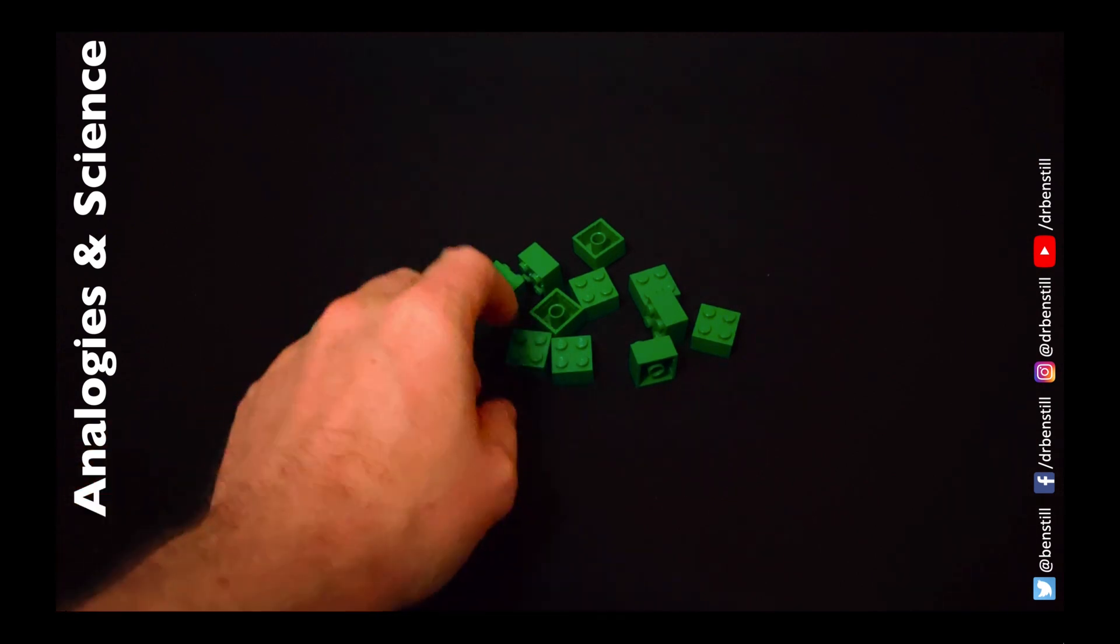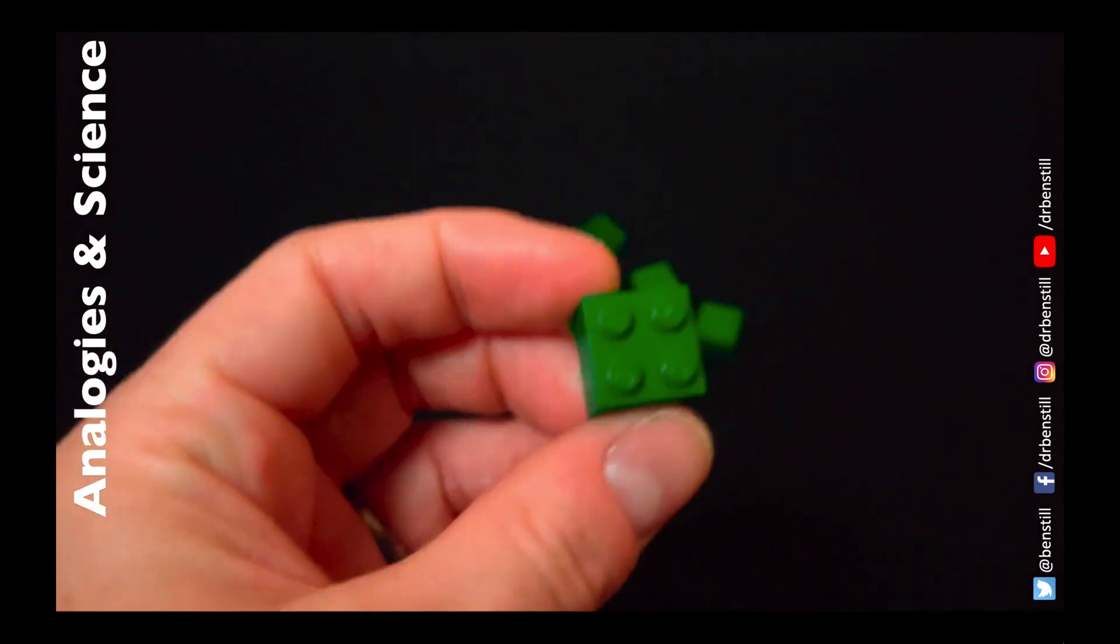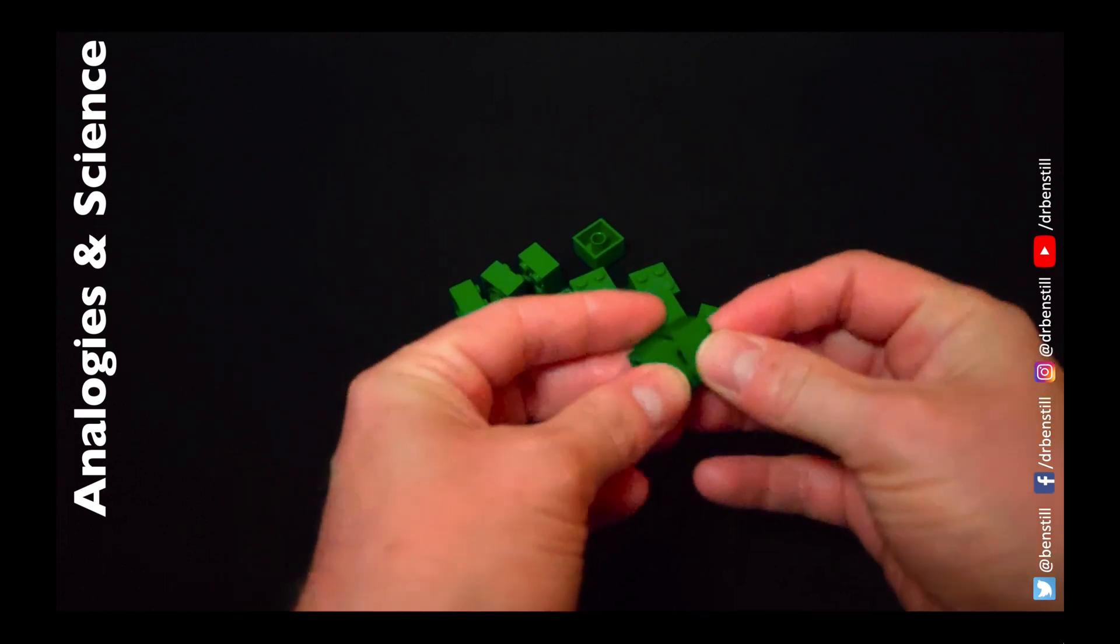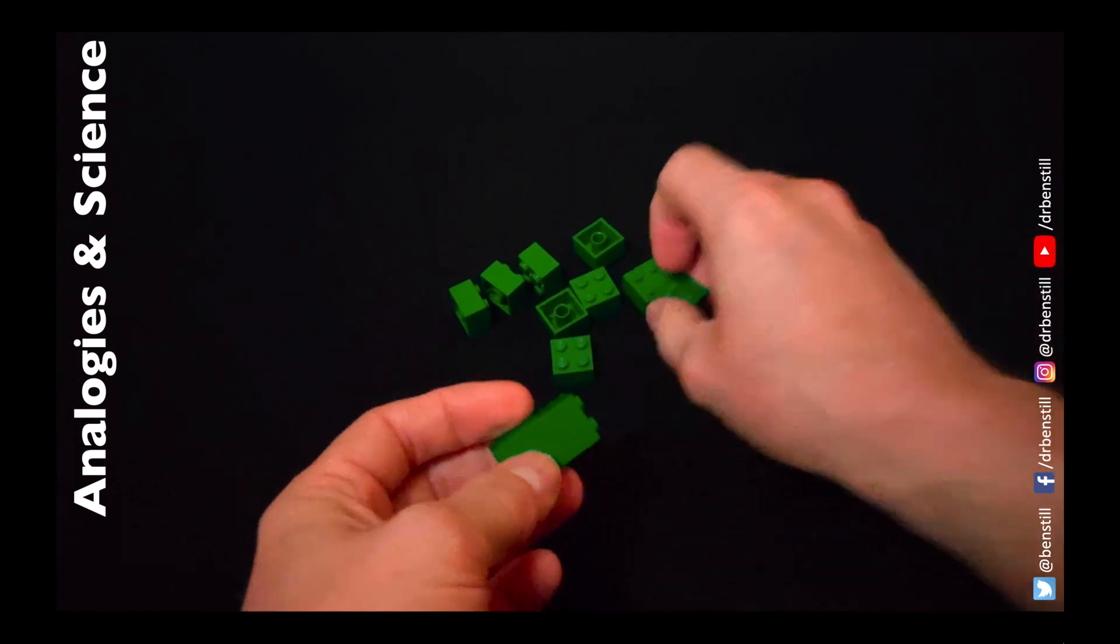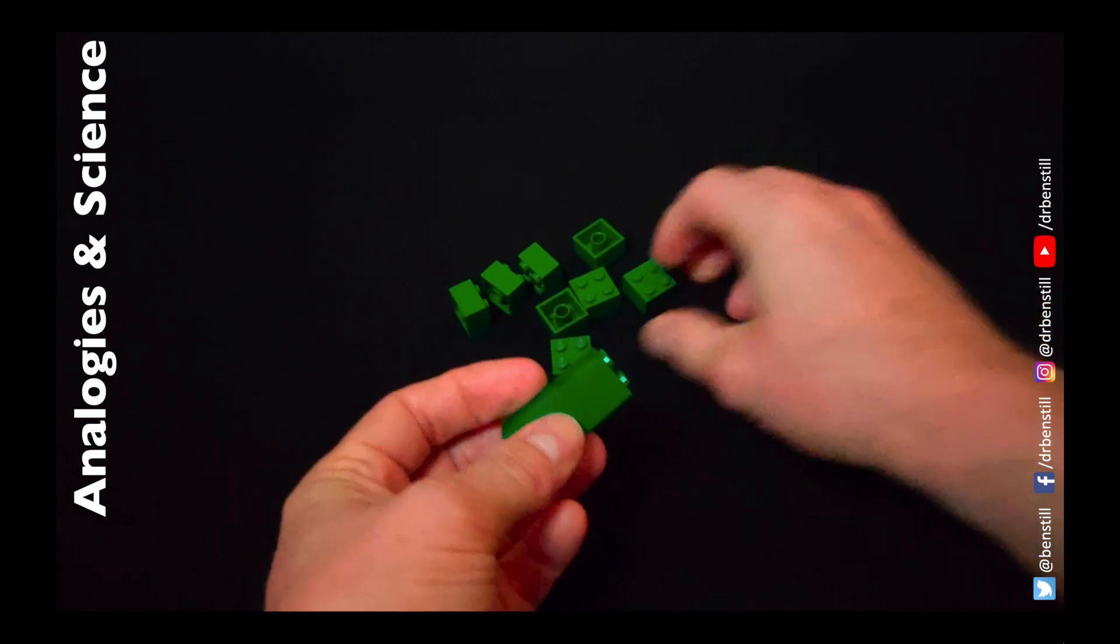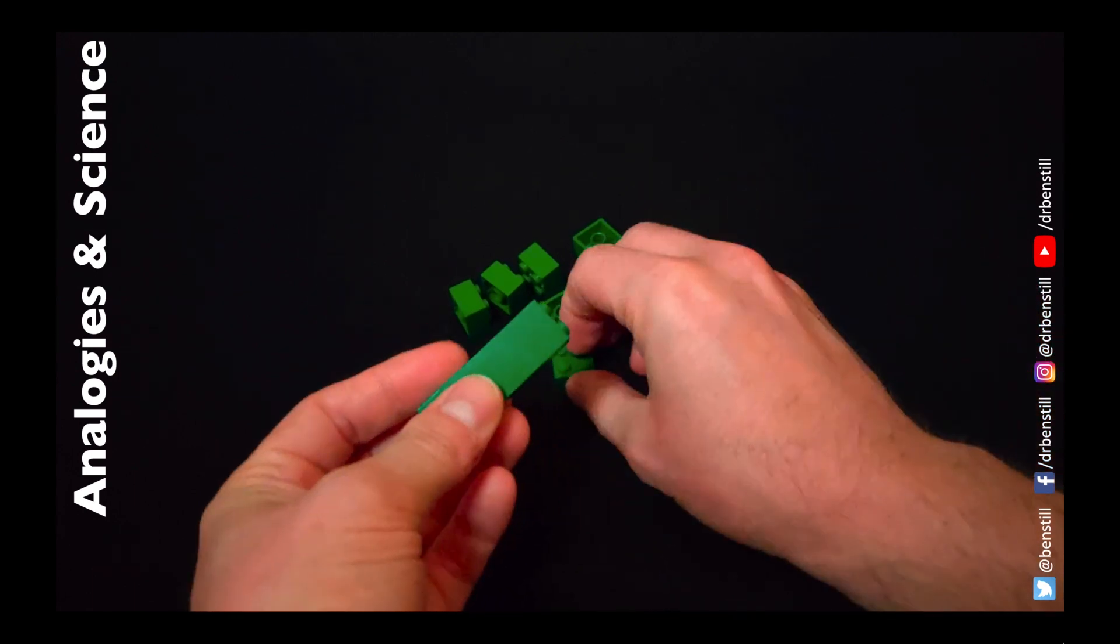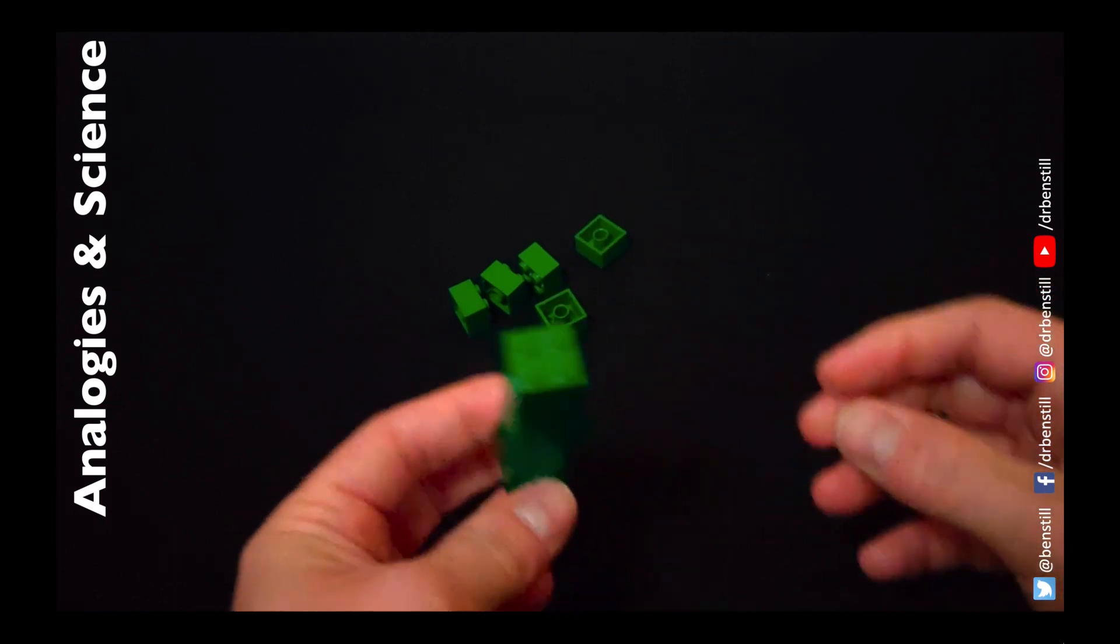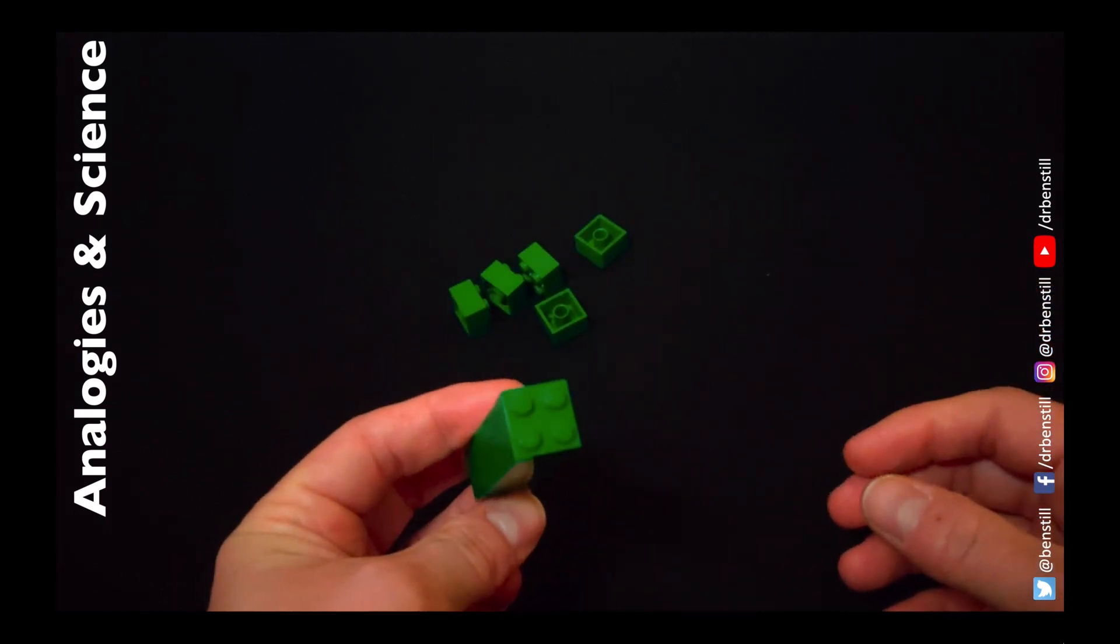Now there are other properties of Lego bricks that are good as well. Notice that these bricks have studs which allows them to piece together to build new larger things. Those studs are useful for representing those fundamental building blocks that make up matter. And that's why I use studded bricks to represent those particles that we call fermions.